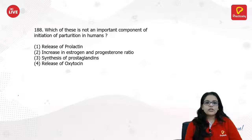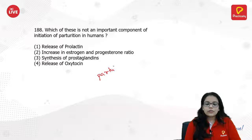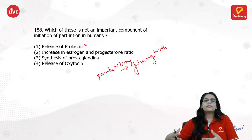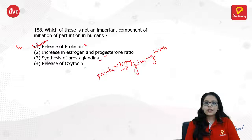Which is an important component of initiation of parturition in humans? Parturition is the process of giving birth. Prolactin is not required — prolactin is for mammary glands and milk secretion. What is required is the increase in estrogen-progesterone ratio, prostaglandins, and oxytocin — but not prolactin.